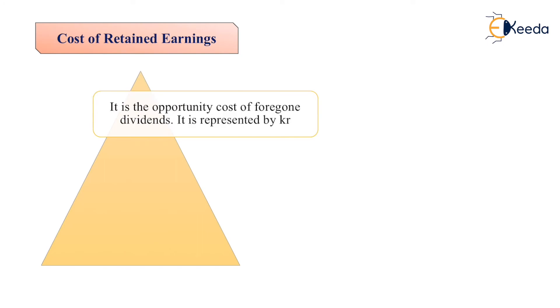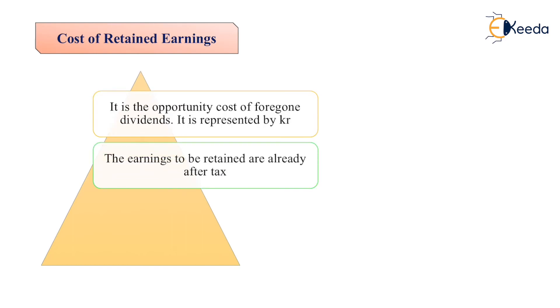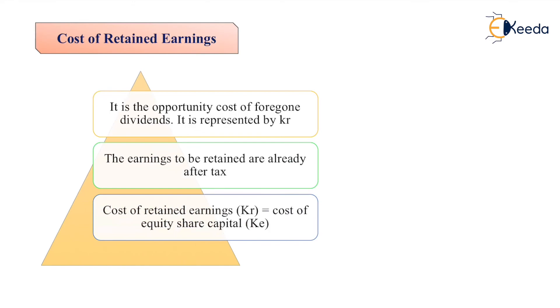Then comes the cost of retained earnings. It is the opportunity cost of foregone dividends, represented by Kr. The earnings retained are already after-tax. The cost of retained earnings, Kr, is equal to the cost of equity share capital. In this video we have discussed about the cost of capital and its types. Thank you.